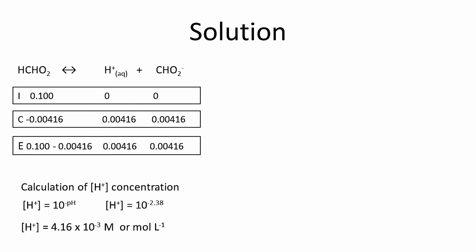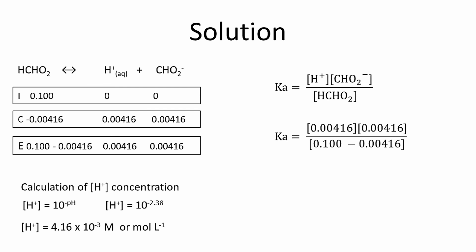If you subtract 0.00416 from 0.1 moles you get the equilibrium concentration of formic acid. Using these numbers we can calculate Ka from the expression: Ka equals [H⁺][CHO2⁻] divided by [HCHO2]. Plugging in the equilibrium concentration values and solving mathematically, the value for Ka is 1.8 × 10⁻⁴. That's how you calculate the dissociation constant of a weak acid if the pH is provided.